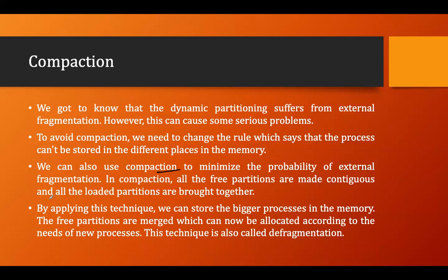In compaction, all the free partitions are made contiguous and all the loaded partitions are brought together. Let's consider a scenario: there is an operating system, some partitions are occupied, and some are free. For example, let's say we have a partition of 2MB, another of 2MB, one of 3MB, and one of 4MB alternating between occupied and free.